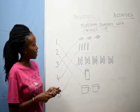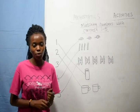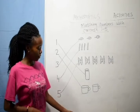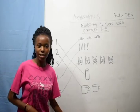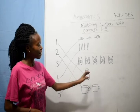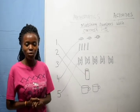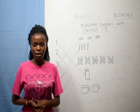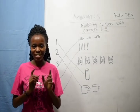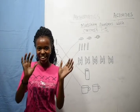Now we have matched numbers with the concrete objects from numbers 1 to numbers 5. In our next lesson, we will continue from number 6 to number 10. Are we together? Thanks so much for watching and for listening. Bye bye bye.